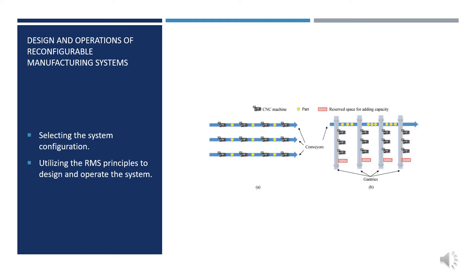The designer of a manufacturing system has to determine three factors: first, the system configuration — the way that machines are arranged and interconnected in the system; second, the equipment — the number and type of machines, the material handling system, and in-line inspection equipment; and third, the process plan — assigning operations to each machine in the system.